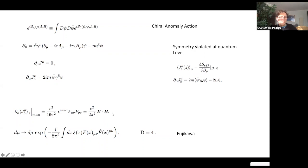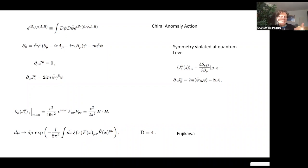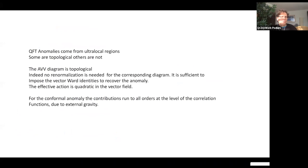Anomalies are usually computed using Fujikawa's method: the path integral measure is not invariant under a certain local chiral transformation while the action is, generating the anomaly contribution. The axial-vector current becomes anomalous, and this anomaly can be written as E·B. A similar derivation applies for the conformal anomaly, but one must stick to d=4. If you use dimensional regularization, you don't see the anomaly emerging from the measure — it comes instead from the counter terms. This is a subtle point clarified only recently.